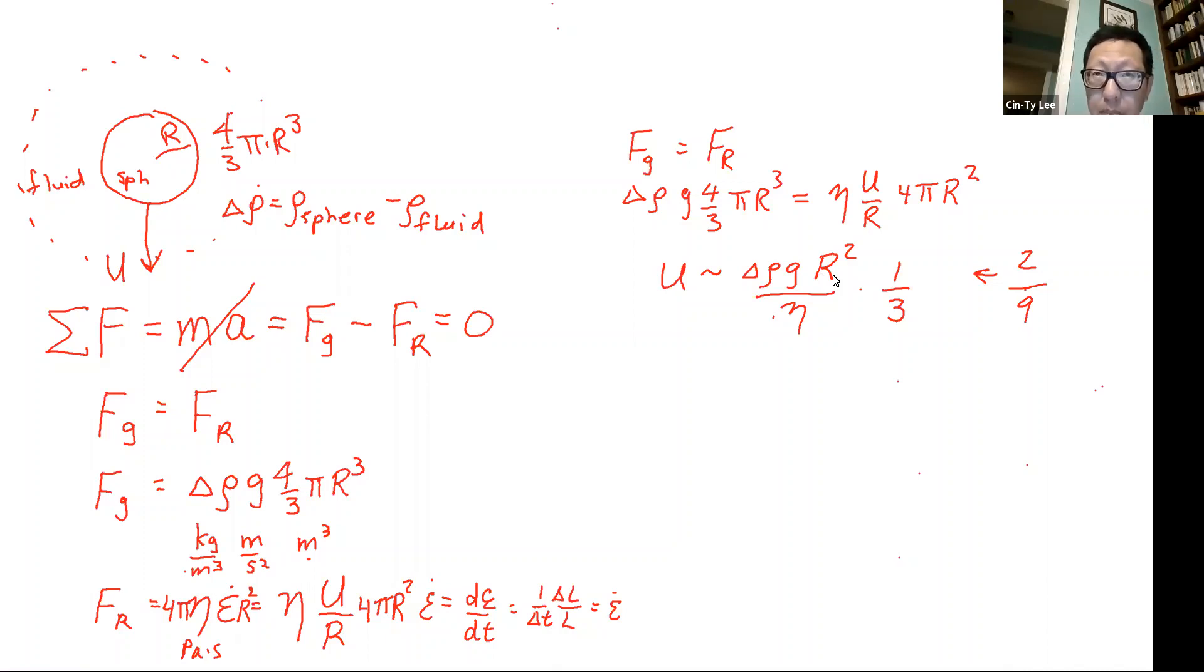So if I were to plot the sinking velocity versus r, radius, size of my sphere, it would scale, would be a parabola to the r squared here. So as r gets big, then velocity increases fairly quickly. When r is very tiny, you just can't sink, no matter how dense you are. That's a very interesting phenomenon.